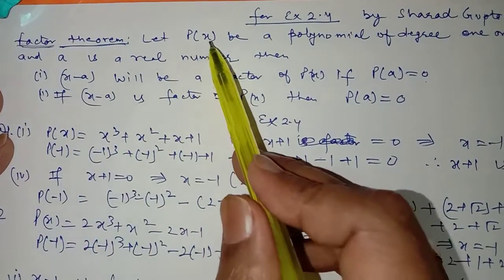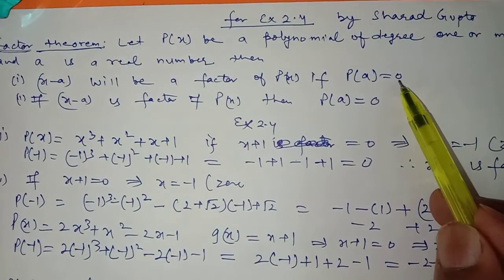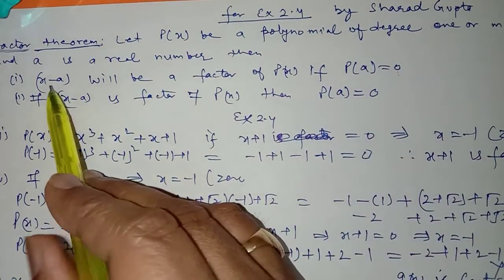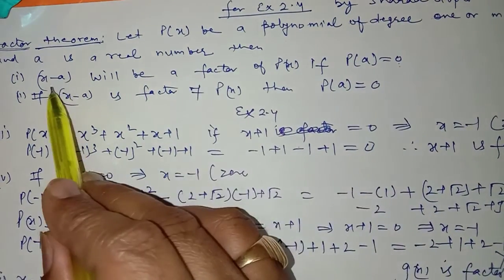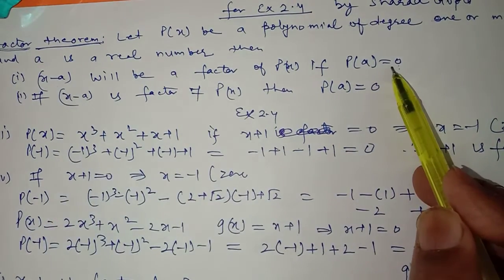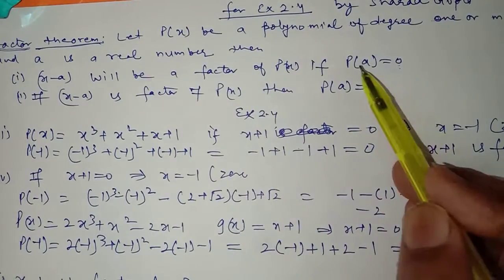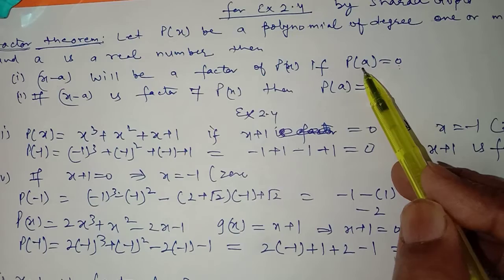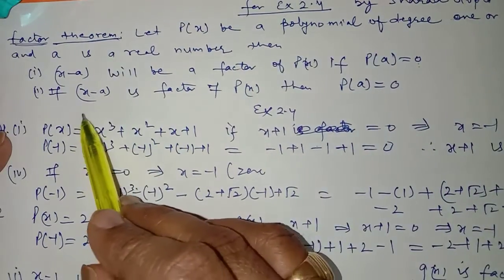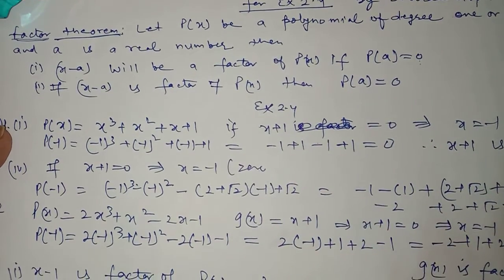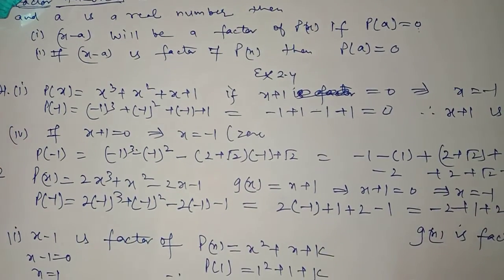If dividing a dividend by a divisor gives remainder 0, then the divisor is a factor of the given dividend. Here p(x) is the dividend and (x − a) is the divisor. If we divide and the remainder is 0, then (x − a) is a factor. The remainder p(a) tells us this — if remainder is 0 it is a factor, otherwise it is not. We discussed the same thing in exercise 2.3.